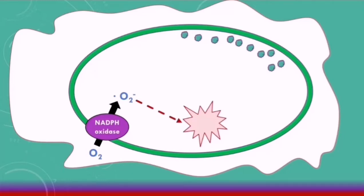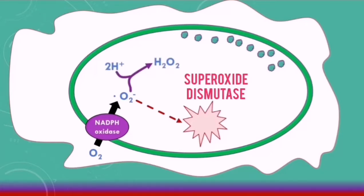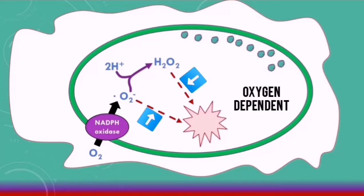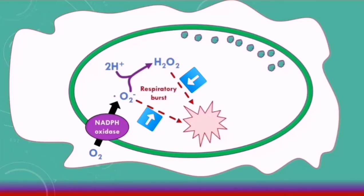The superoxide radicals can combine with hydrogen ions and form hydrogen peroxide, a reaction catalyzed by superoxide dismutase. The hydrogen peroxide can also attack the pathogen and help destroy it. Because these reactions are oxygen dependent, the use of superoxide radicals and hydrogen peroxide to destroy the antigens is called the respiratory burst.